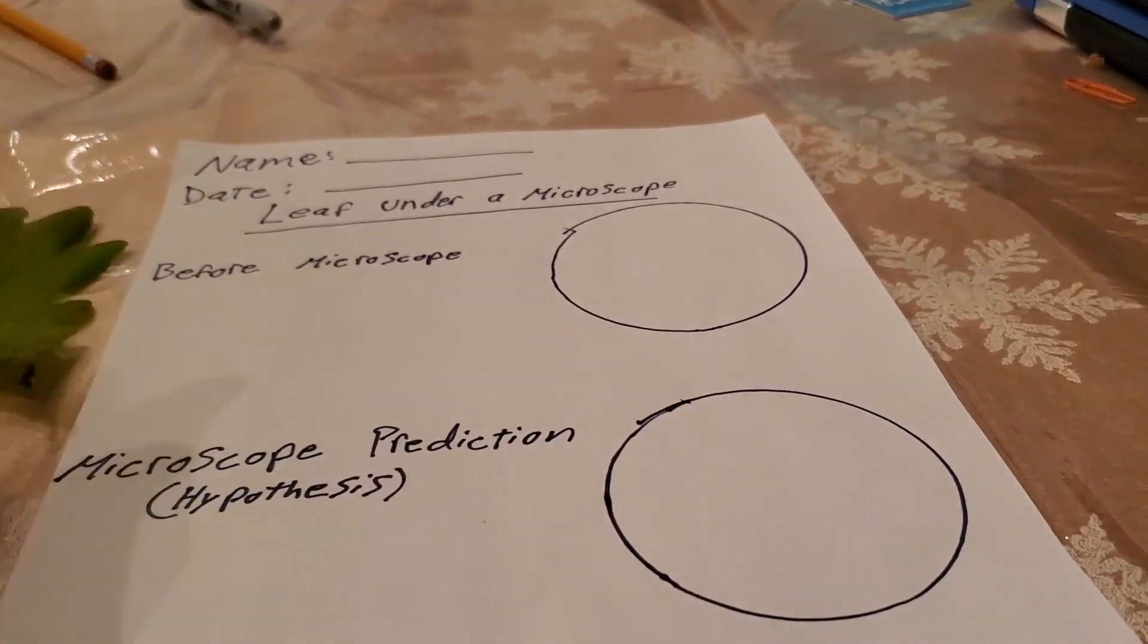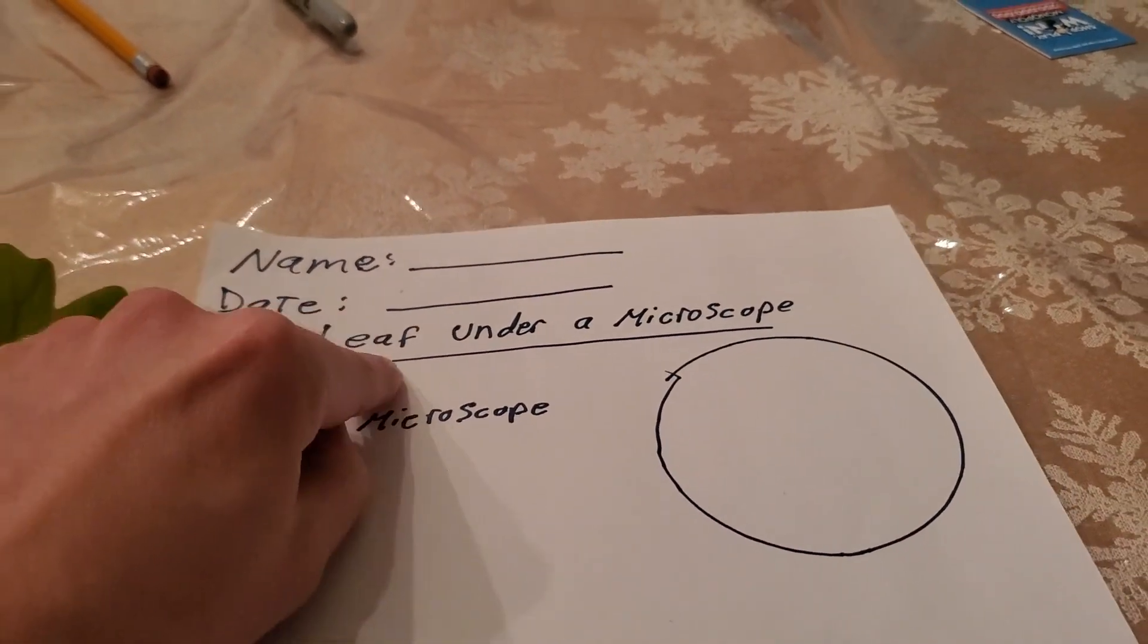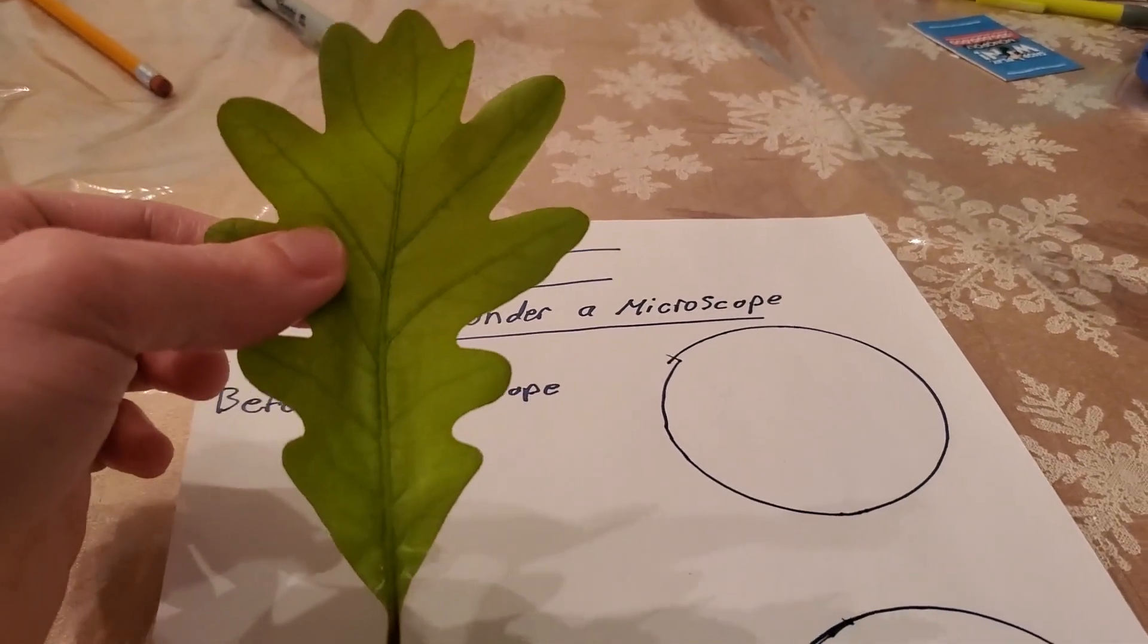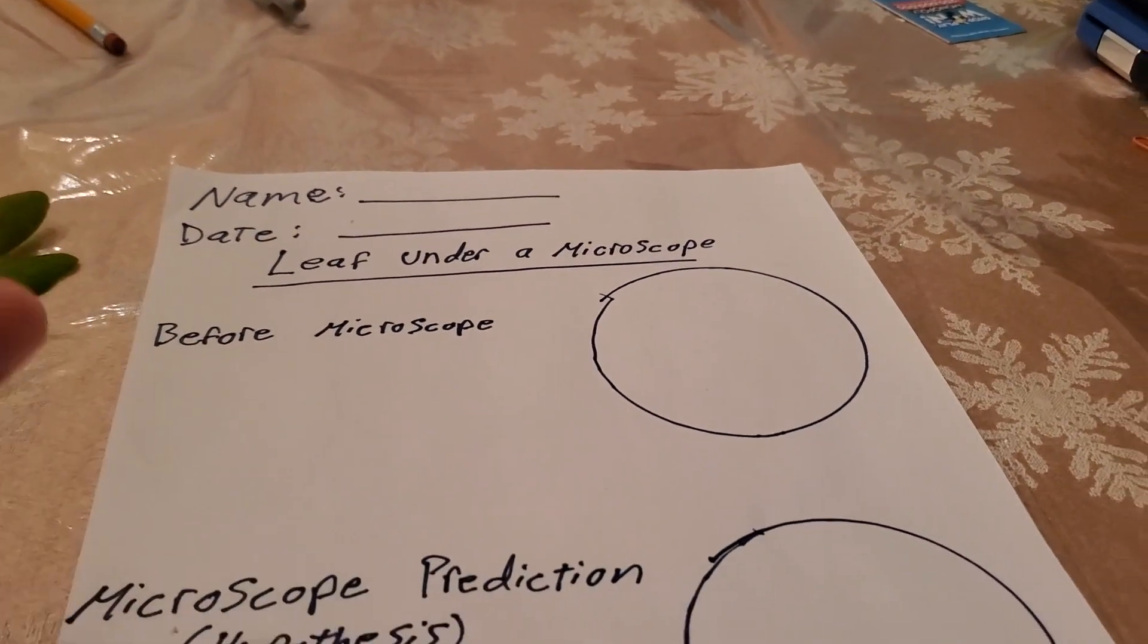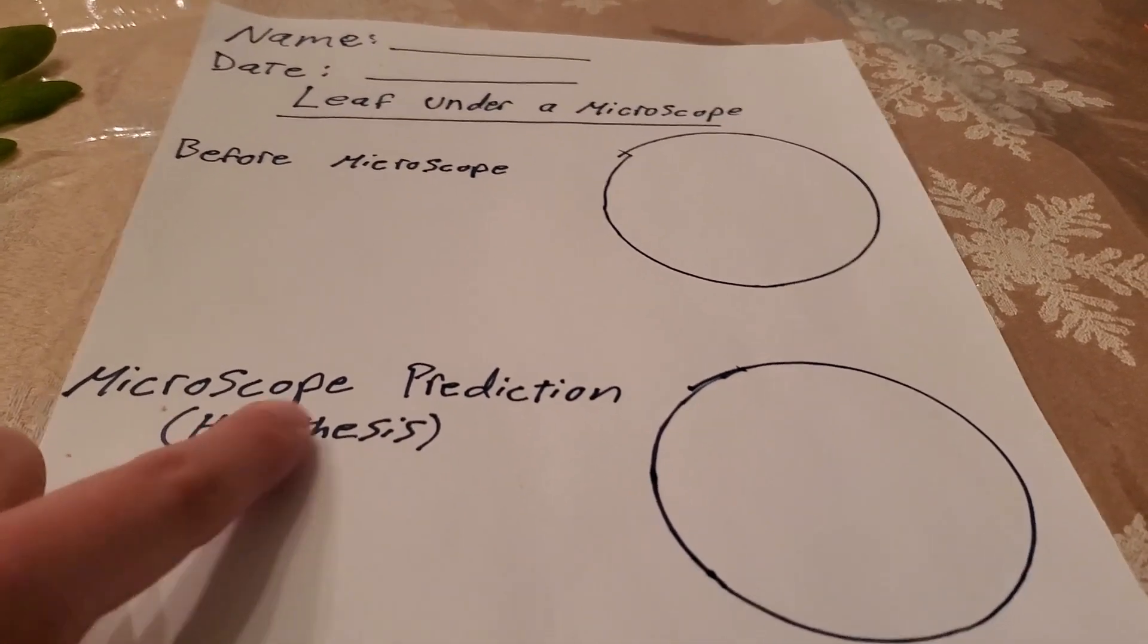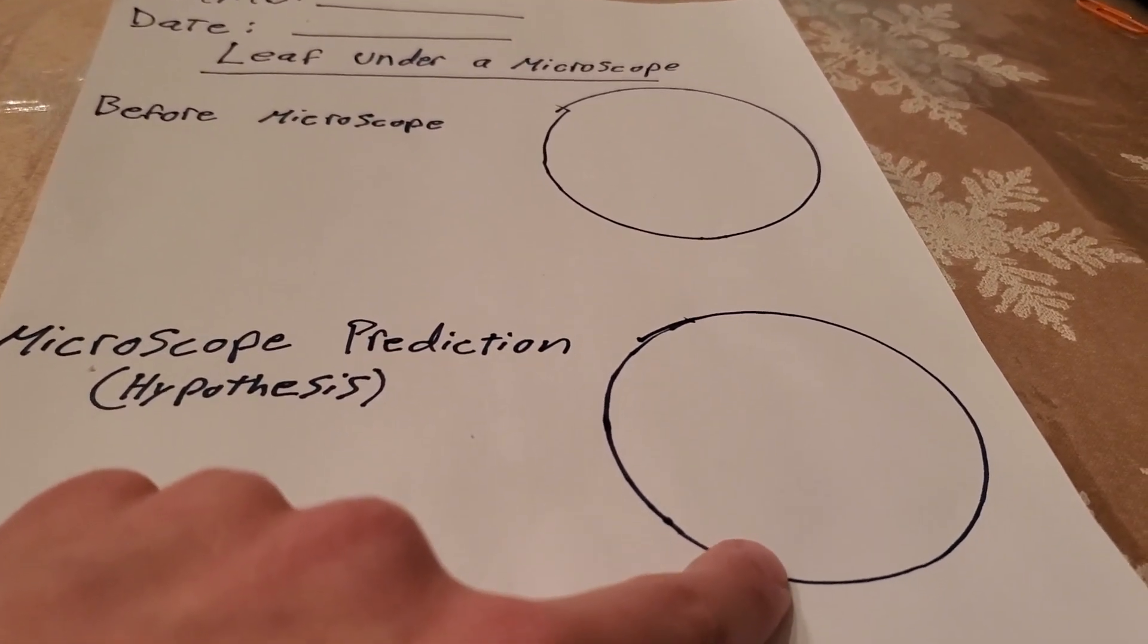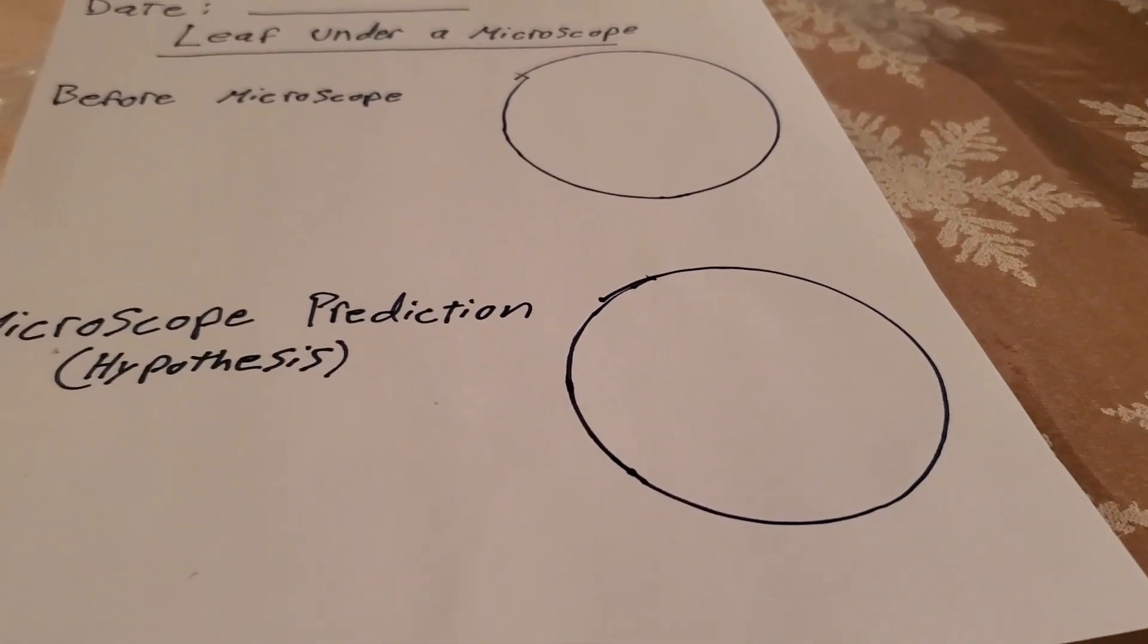So that is your assignment for today. You're just going to put your name, date. You can go ahead and put the title. What does the leaf look like before we ever put it under a microscope? So right now, what does it look like? You're going to draw this or whatever leaf you found outside. Next, you're going to make a guess. Your microscope prediction or hypothesis, whichever word you like more. And then you're going to draw me what you think it's going to look like. I can't wait to see everyone's answers. So just let me know what you think.